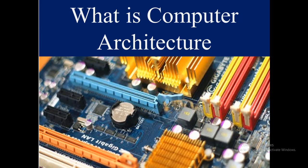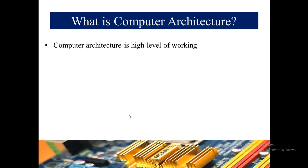Welcome to the second part of COA: Computer Organization and Architecture. In the previous lecture we discussed computer organization, which is the internal working and internal structure of a computer. Computer architecture, on the other hand, is the high-level working — the front end that a programmer deals with — including what type of instruction set is used inside the system and what cache optimization techniques are used.